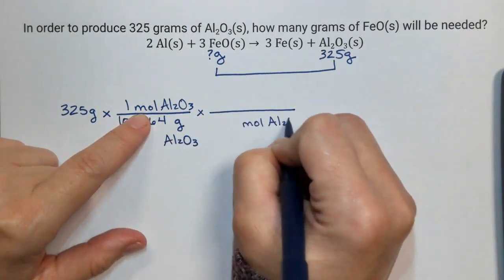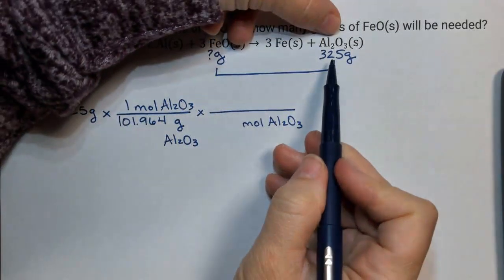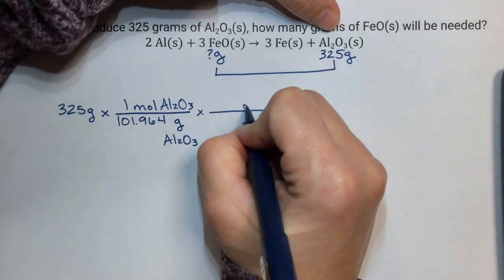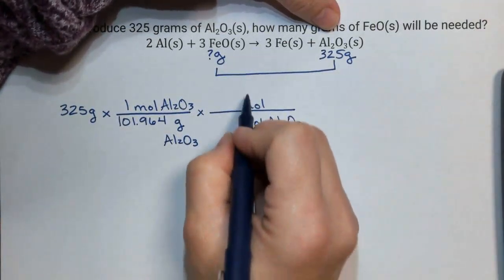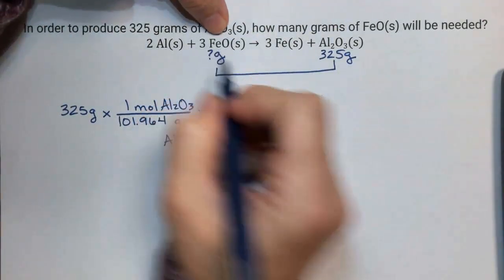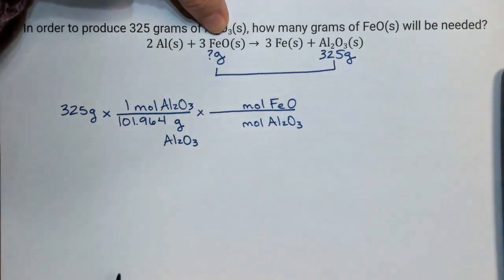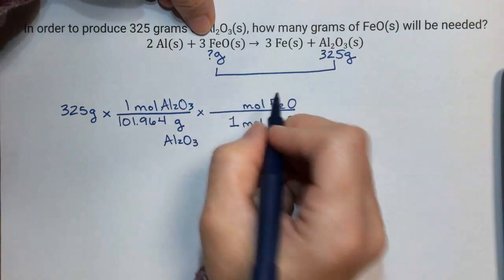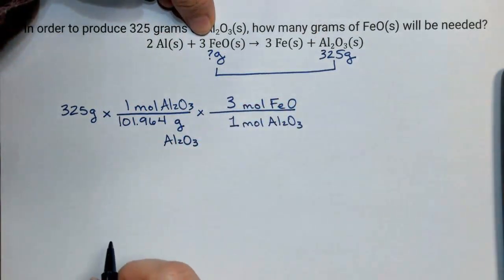This is my chance to switch to moles of this, and I want to do the mole-to-mole ratio of what I want, which is the iron oxide. The ratio is 1 aluminum oxide to 3 iron oxides.